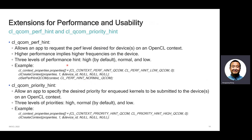We also have a few extensions that provide performance or priority hints. For example, we have the CL Qualcomm perf hint extension. When you create a context, you can specify a performance hint: high, normal, or low. By default it's high performance. You can also set the performance hint by calling a specific function. We also have CL Qualcomm priority hint, which allows apps to specify the desired priority for in-queue kernels to be submitted to the device. There are three levels of priorities on an OpenCL context.